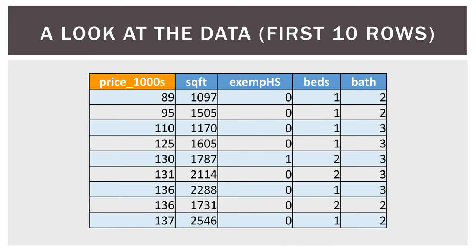Looking at the first 10 rows: on the left we have our target variable, price in thousands. The first house has a price of $89,000 US dollars. Square footage is in the second column — that first home is about 1,100 square feet. Exemplary high school is X2, where zero means no and one means yes. Then beds and bathrooms — the first home has one bedroom and two bathrooms.